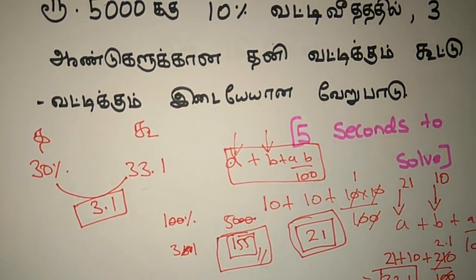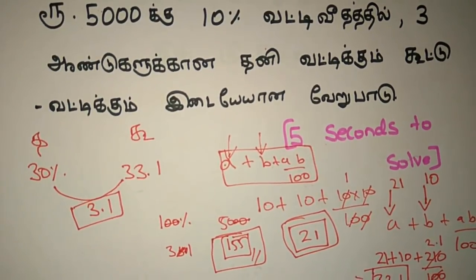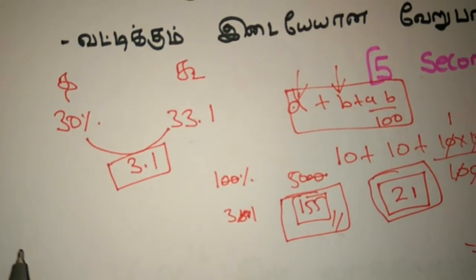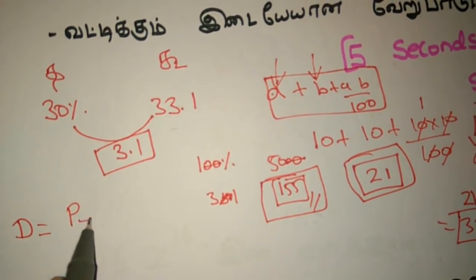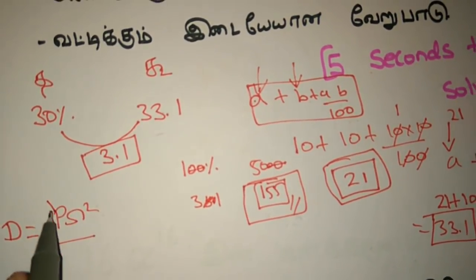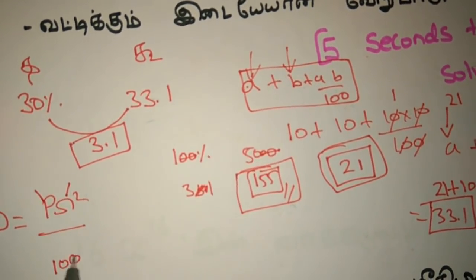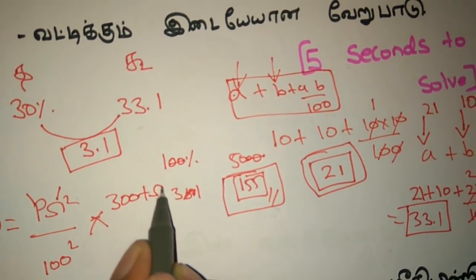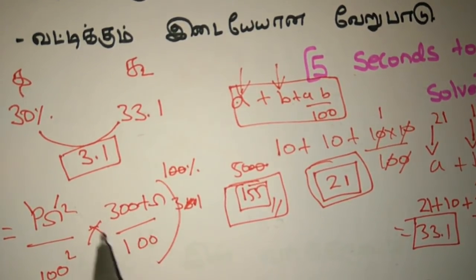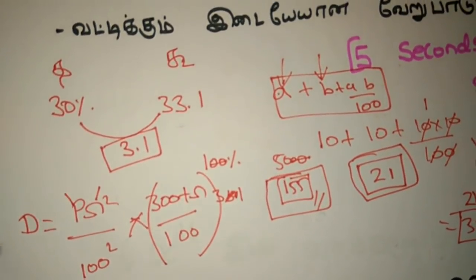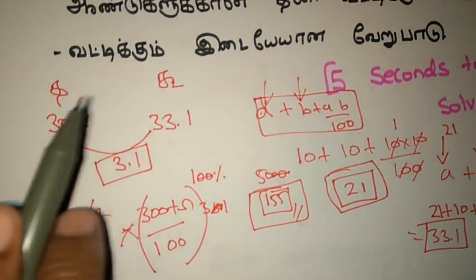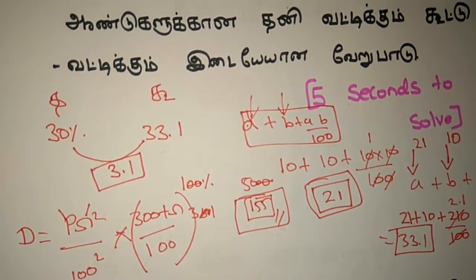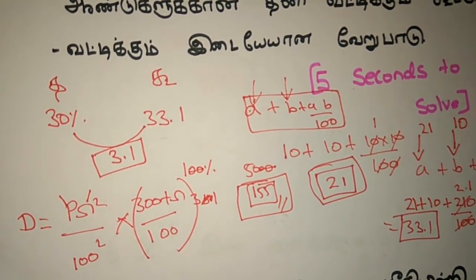Just one of the same things we can do — we can solve the formula. Suppose we can solve the formula: Difference is equal to PR squared by 100 squared, into 300 plus 6 by 100. So we can solve this formula.